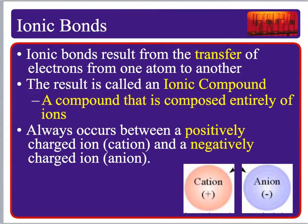Ionic bonds result from the transfer of electrons from one atom to another. If we're transferring electrons, one atom is going to become positive, and the one receiving the electron will become negative. Because we have these opposite charges, there's going to be an attraction between the two, and this attraction is called an ionic bond. Ionic compounds are composed entirely of ions — positive and negative.